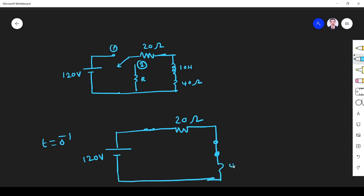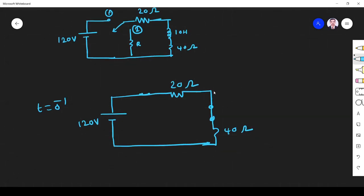40 ohm here. Now I can find what is the current flowing through this inductor IL(0-). So IL(0-) is equal to V by R. What is the voltage? 120 divided by 60. This is 2 amperes.